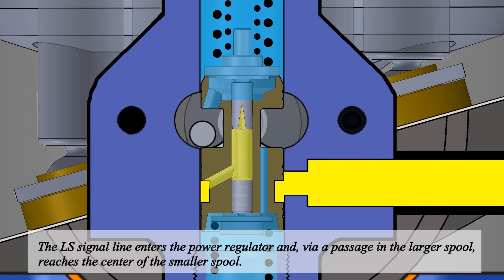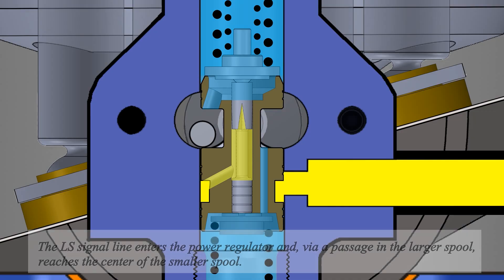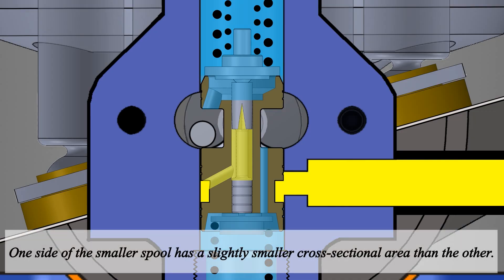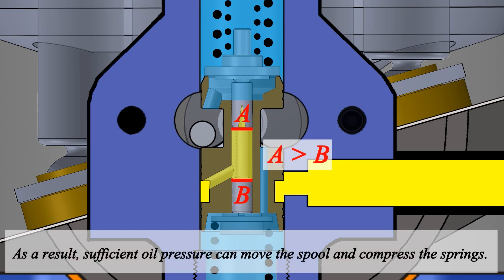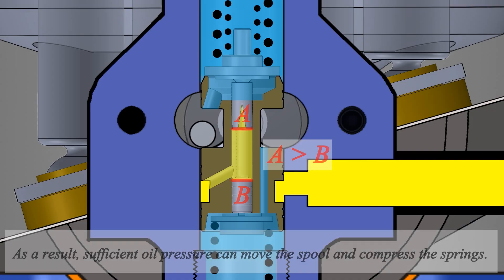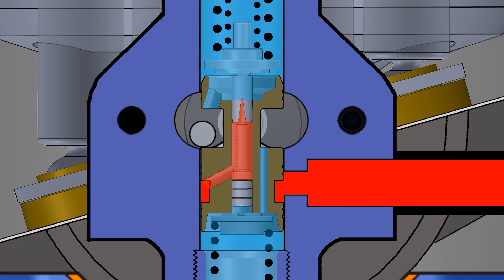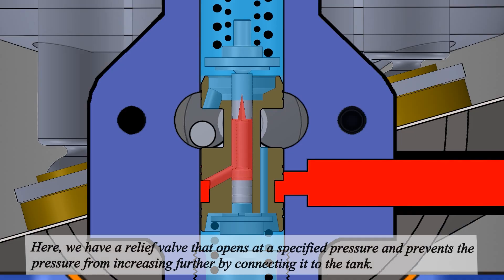The LS signal line enters the power regulator and, via a passage in the larger spool, reaches the center of the smaller spool. One side of the smaller spool has a slightly smaller cross-sectional area than the other. As a result, sufficient oil pressure can move the spool and compress the springs. There is a relief valve that opens at a specified pressure and prevents the pressure from increasing further by connecting it to the tank.